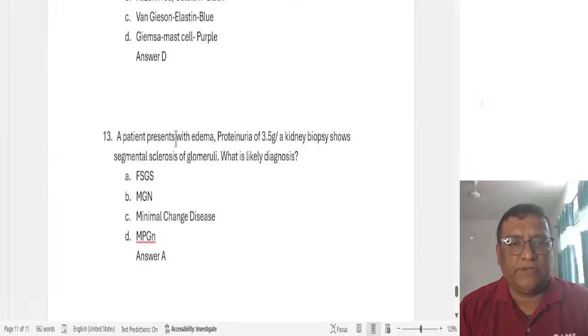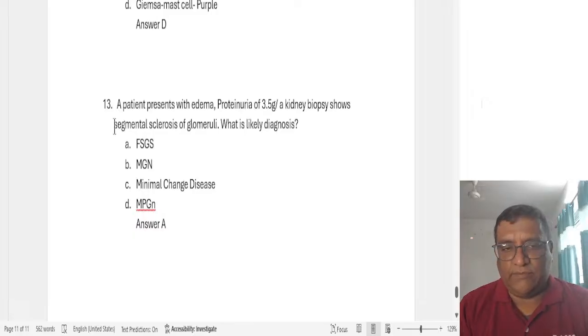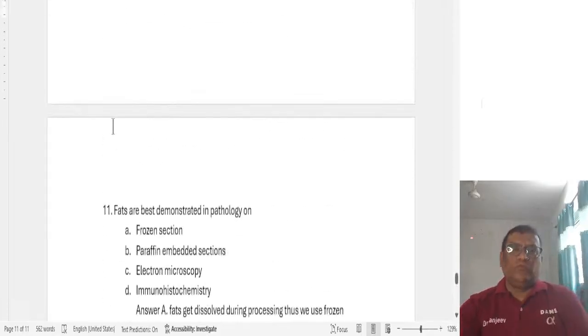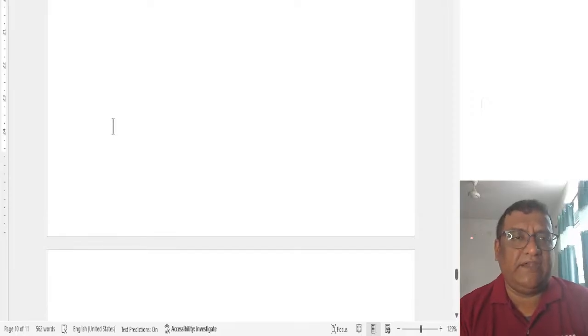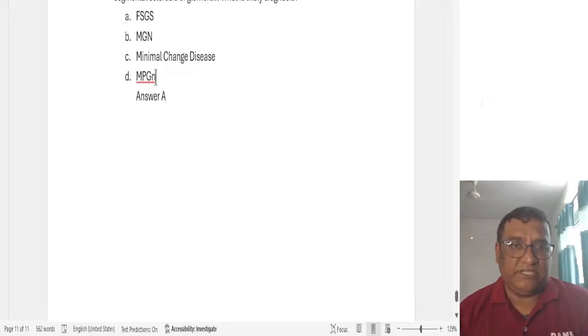One more question. A patient presents with edema, proteinuria of 3.5 grams and a kidney biopsy shows a segmental sclerosis in the glomeruli. Please try to recollect this properly. If this was the exact image was given or they just had described this. Some people told me it was just described. What is the likely diagnosis? FSGS will be the answer because there is a segmental sclerosis that has been given to us. So these were pure pathology questions that were there. Few more questions which I am sure will be dealt in pediatrics and other things. Like there was one Prader-Willi syndrome. But that was more clinical one. Then there were few more which were more clinical questions. They will be discussed in corresponding subjects medicine or in pediatrics.